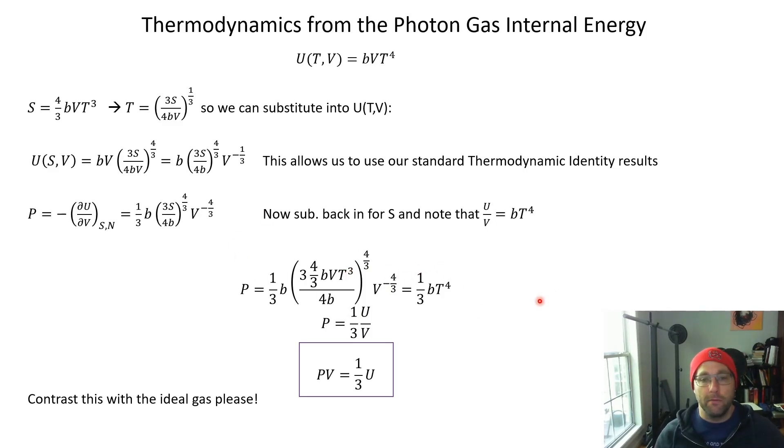What you get is that the pressure equals one-third B T to the fourth, and BT to the fourth is U over V. So the pressure is one-third U over V—one-third times the energy density. That's really cool. Another way to write it is PV equals one-third U. Compare and contrast that with what you would get in the ideal gas case. Talk about and try to understand what are the differences, what are the similarities.